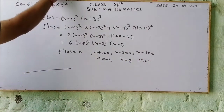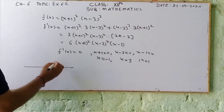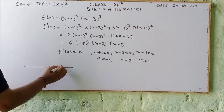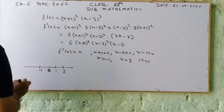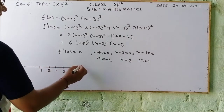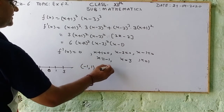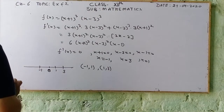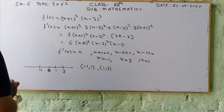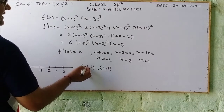We draw a number line and place the critical points: -1, 1, and 3. The intervals become: minus infinity to -1, -1 to 1, 1 to 3, and 3 to infinity. We now check the sign of f'(x) in each interval.